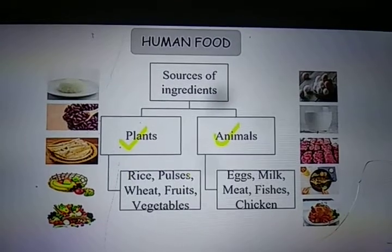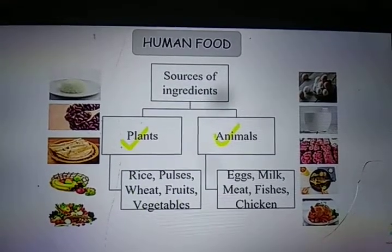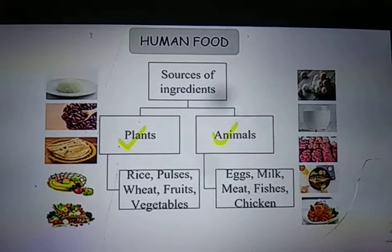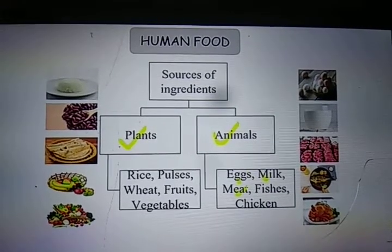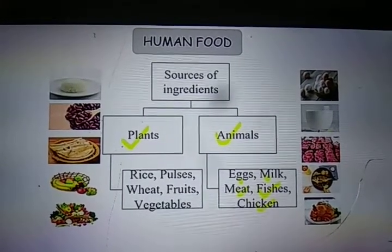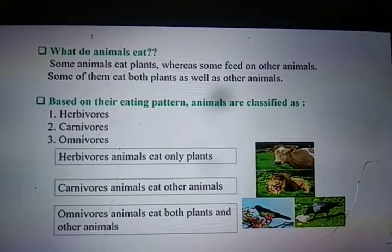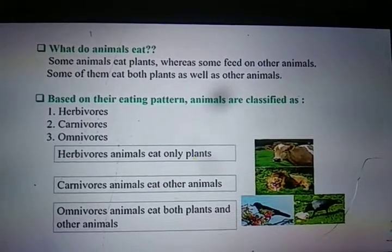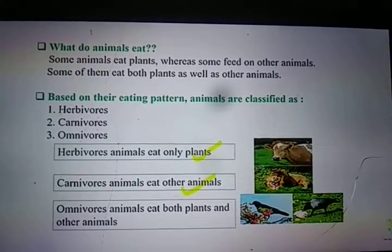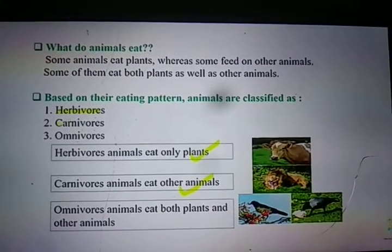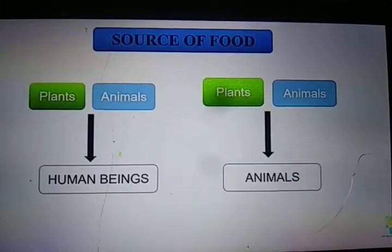We get rice, pulses, wheat, fruits and vegetables from plants, and similarly we get eggs, milk, meat, fish and chicken from animals. We also know that animals depend on plants and other animals for their food. Remember we studied about herbivores, carnivores and omnivores.